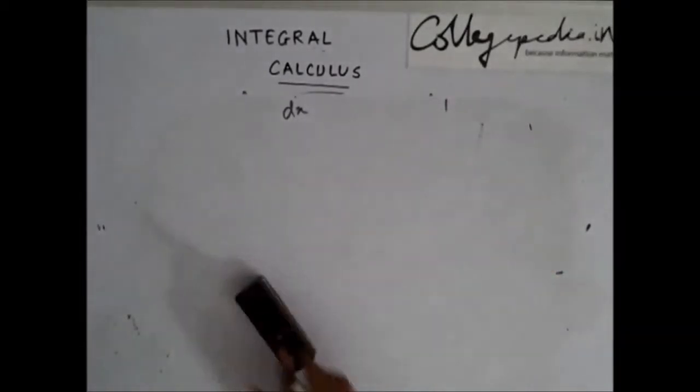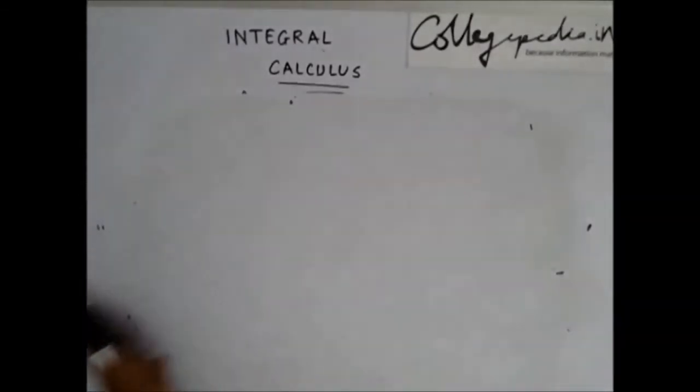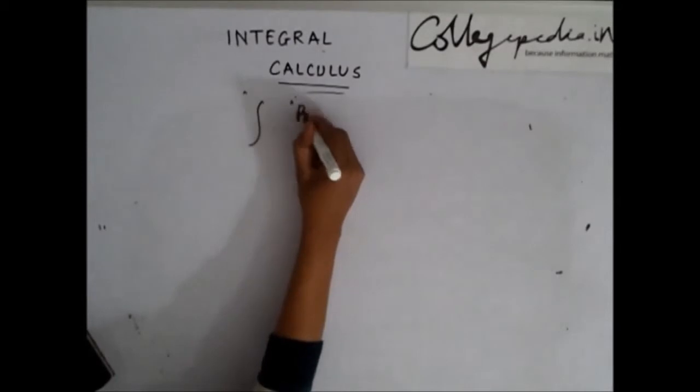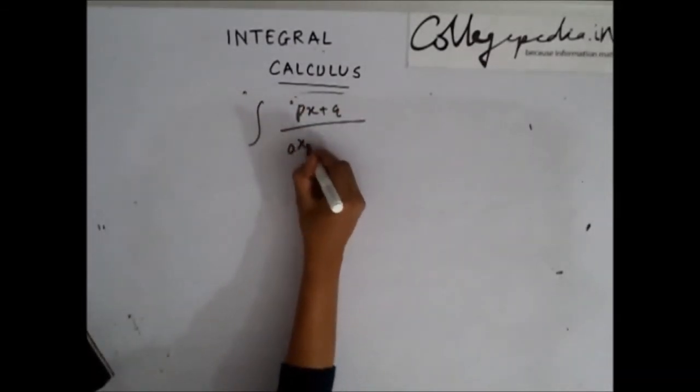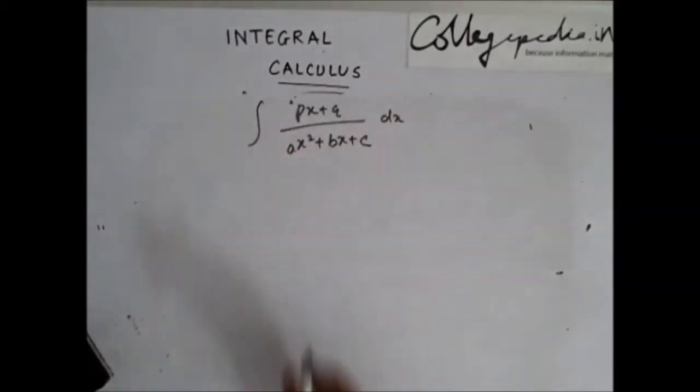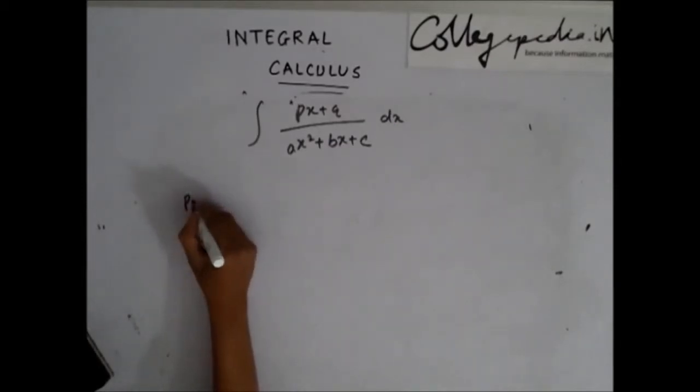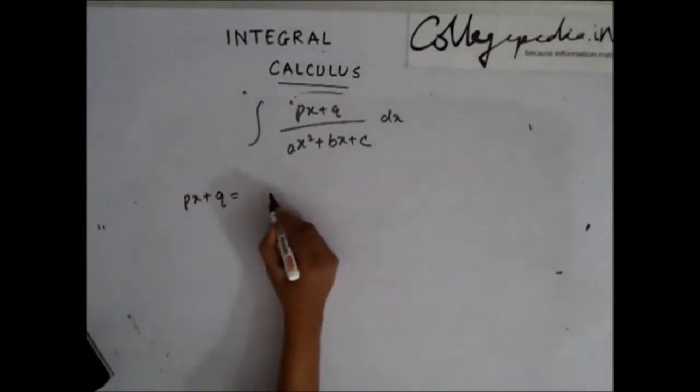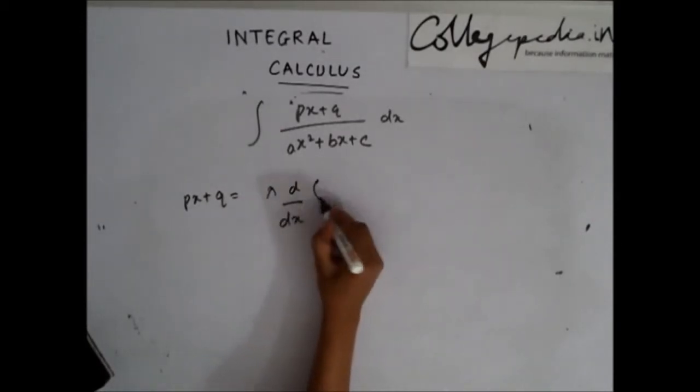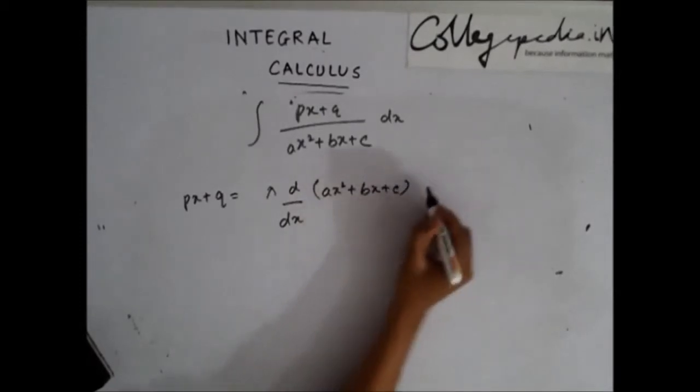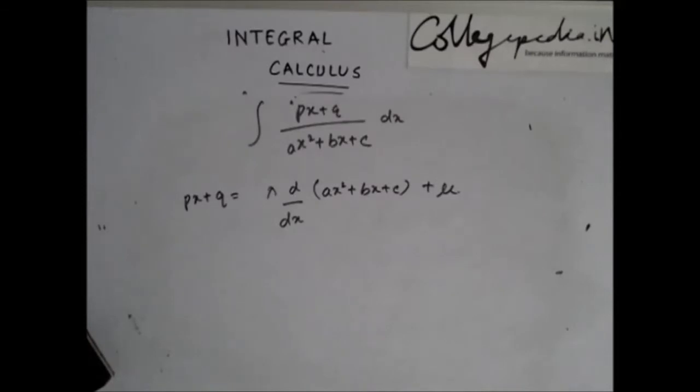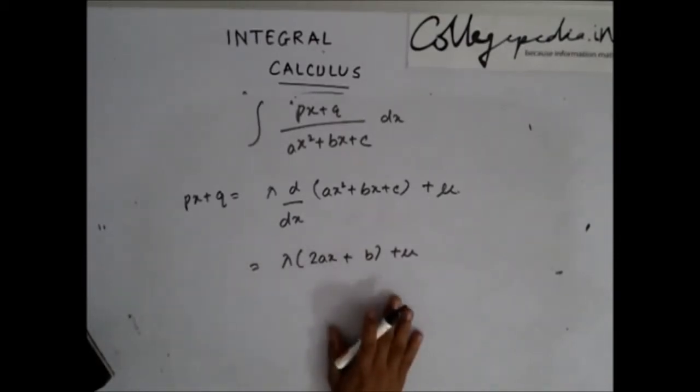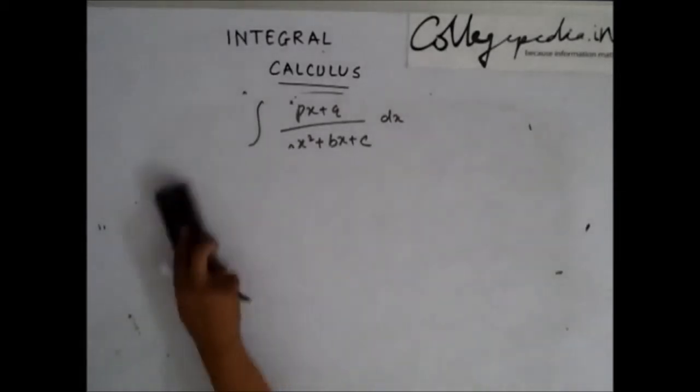Okay, now let's take another example. Let's say we have integration of the form px plus q divided by x square plus bx plus c dx. In this type of questions, you should write px plus q as lambda times derivative of x square plus bx plus c plus some mu. Write this as 2x plus b plus mu. Now, compare the coefficients and solve for lambda and mu. Why we did this will become clear when I take one example.